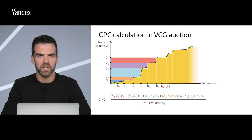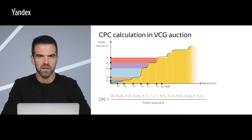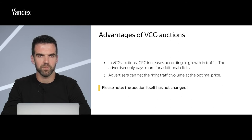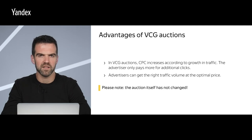In the end, despite the complicated formula and the smoothed-out graph, the essence has not changed. The key advantages of the VCG auction system are: the cost per click increases according to growth in traffic, the advertiser pays more only for additional clicks, and advertisers benefit from getting more traffic. Advertisers can get the right traffic at the best price if they know their revenue from a click and set the same value as a bid.